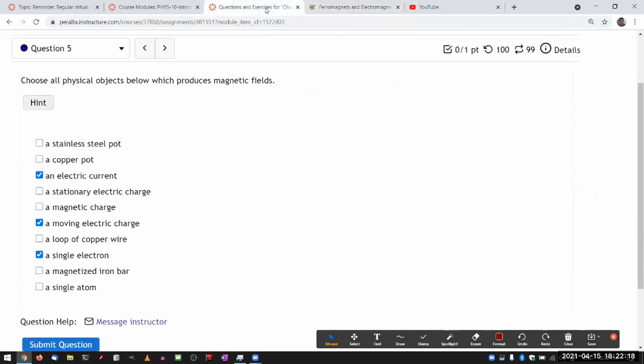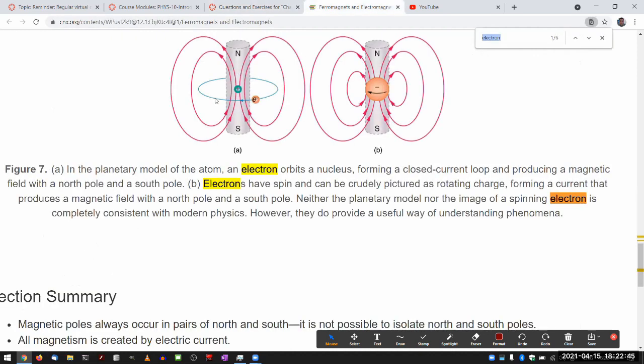A single atom also produces magnetic field. I think the textbook actually describes it, yeah, here. In the planetary model of the atom, which isn't 100% correct, but it's correct enough in that the electron, there's a current you can associate with it, and that ends up producing magnetic field. I see a question. Let me just read it out loud. Is there a differentiation between an electric current and a moving electric charge? Is the former flow of electrons the latter as a moving group?